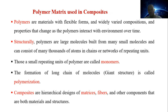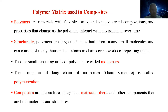When monomers are connected to each other, they produce a giant structure called a polymer, and the process of doing this is called polymerization. In chemistry, there are different types of polymerizations. Composites are a hierarchical design of matrices, fibers, and also other components.